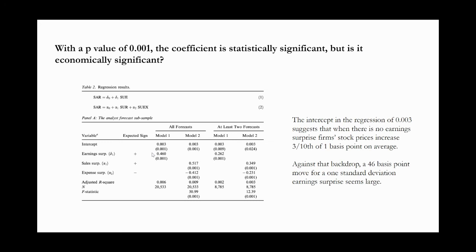We have to think about this. The intercept in the regression of 0.003 means that if there's no earnings surprise, if earnings surprise is zero, what happens to the stock? If analysts get it exactly right and there's no earnings surprise, the answer comes from the intercept. On average, when there's no earnings surprise, the firm's stock price increases three-tenths of one basis point.